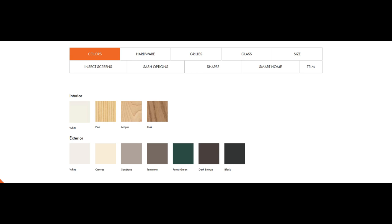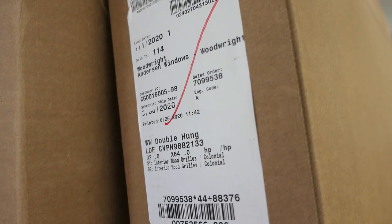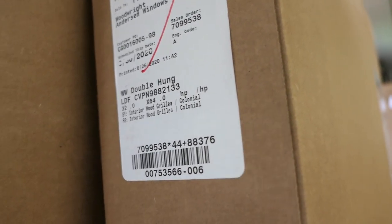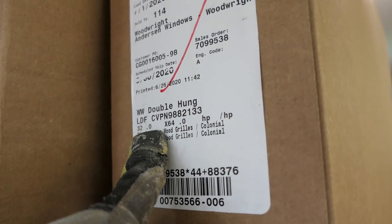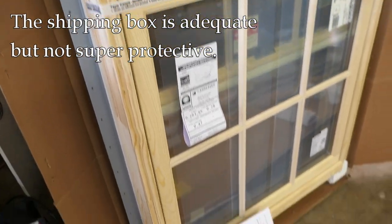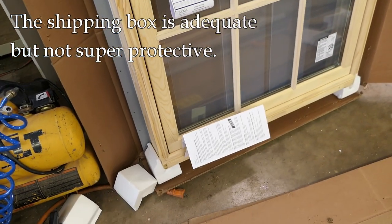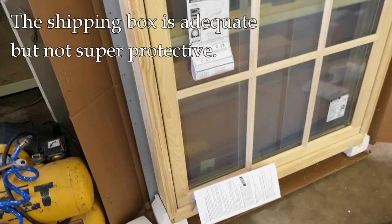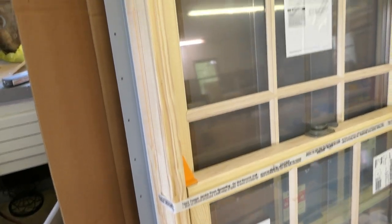The boxes are well labeled. You won't have any trouble figuring out which window is which. When you open the box, this is what you see. The corners are protected by these styrofoam feet, top and bottom.